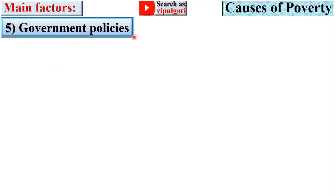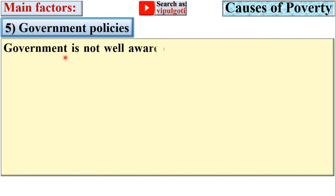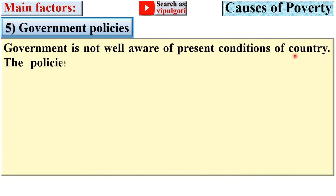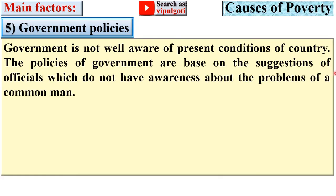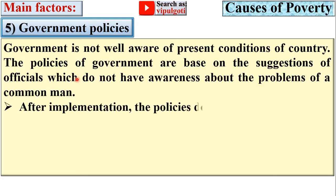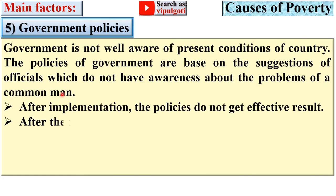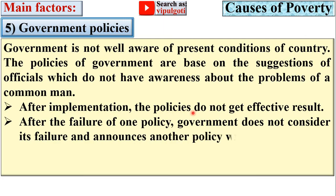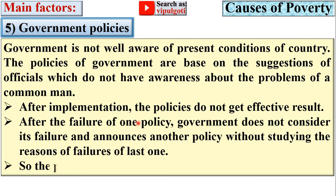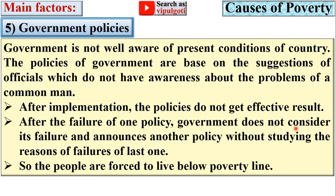Next, government policies. The government is not always well aware of the present condition of the country. The policies of the government are based on suggestions of officials who do not have awareness about the problems of the common man. After implementation, the policies do not get effective results. After the failure of one policy, the government announces another policy without studying the reasons for the failure of the last one, forcing people to live below the poverty line.